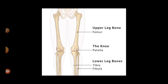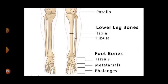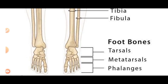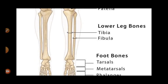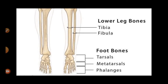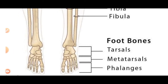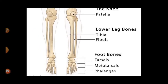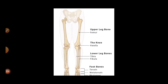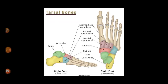The first bone of the leg is the hip bone, also called the innominate bone or coxal. Second is the femur, which is the longest and strongest bone of the body. Then the patella, also called the kneecap. Below that is the tibia and fibula. The tibia is the strong, weight-bearing bone on the medial side. There are 7 tarsals which are the ankle bones, 5 metatarsals, and finally the phalanges.